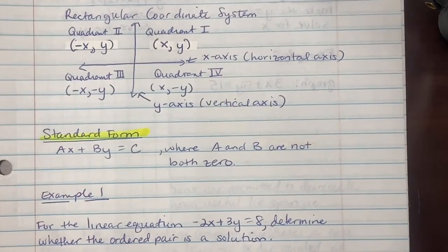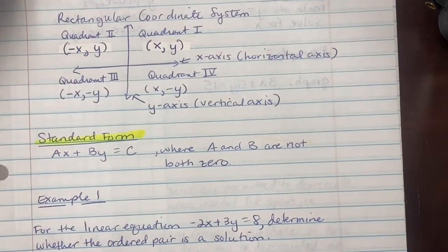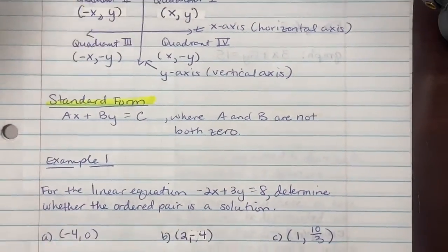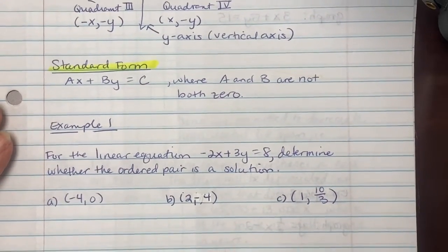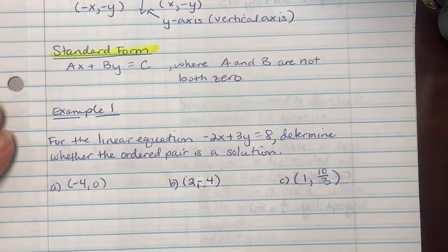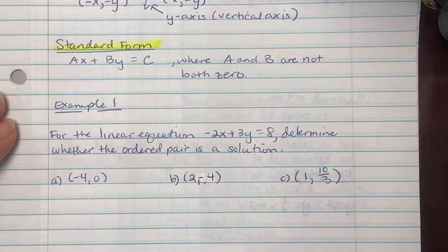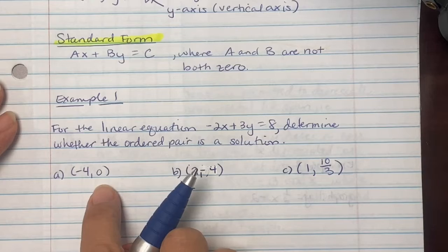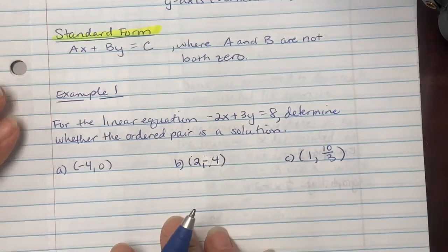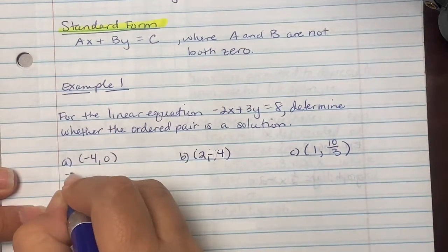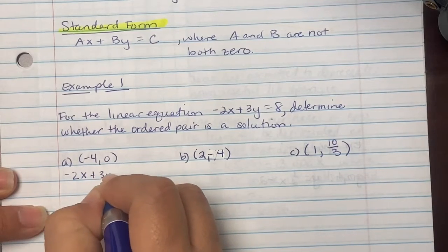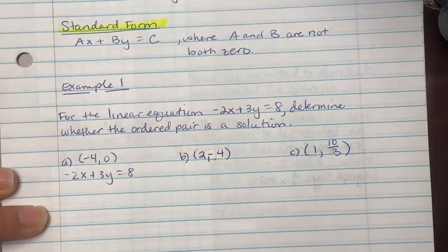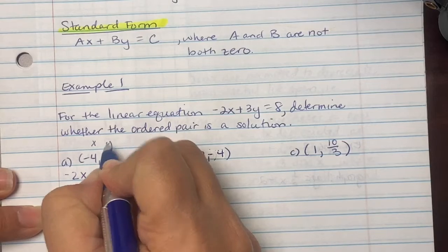In example one, for the linear equation -2x + 3y = 8, determine whether the ordered pairs is a solution to the system. So in order to determine if it's a solution, we are substituting in (-4, 0) into our equation. First thing I'm going to do is write down -2x + 3y = 8. And I'm going to label that this is my x and this is my y.